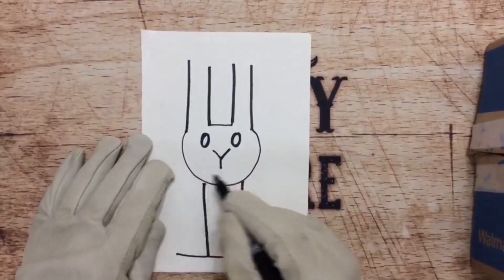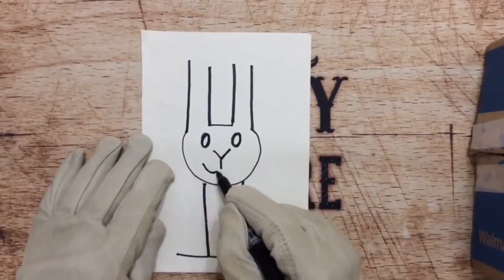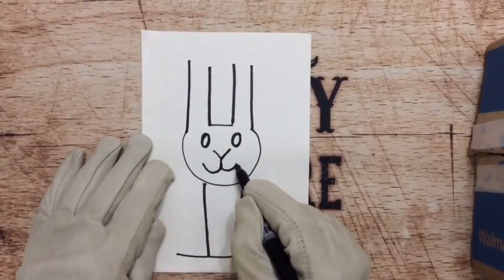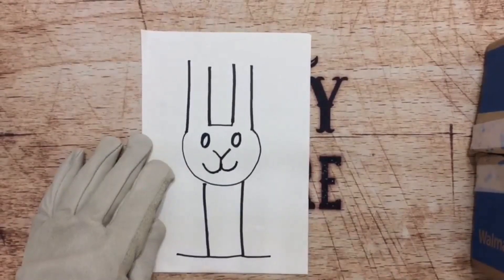Now, we're going to do a lowercase w. It's going to come over here, touch the middle right there where that Y is. Now you've got your little bunny rabbit mouth.